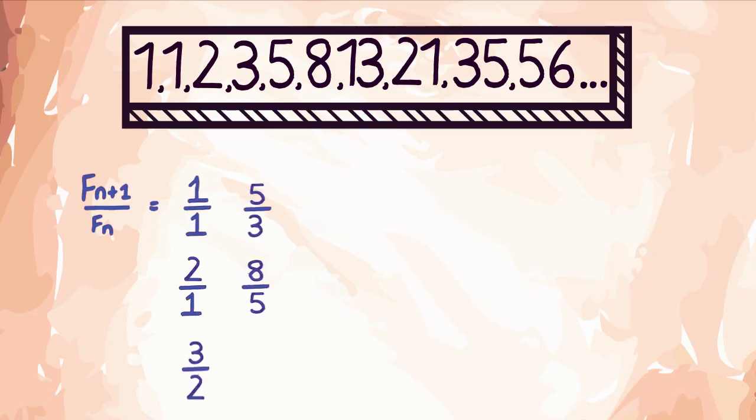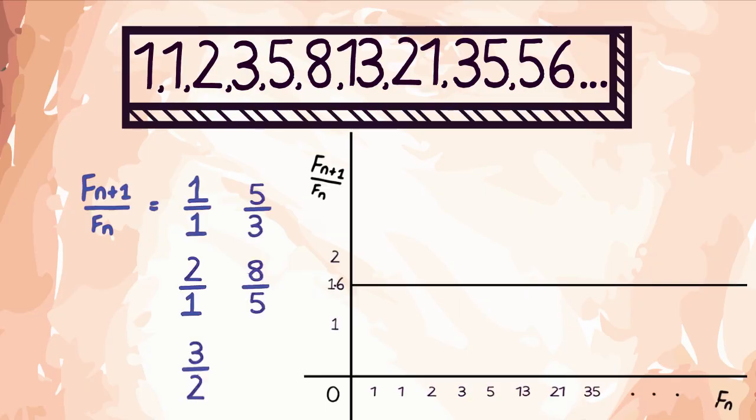If you divide two consecutive Fibonacci numbers and plot the result on a graph, you can see the plotted points cycle above and below 1.6 and are broadly equal to each other as well.